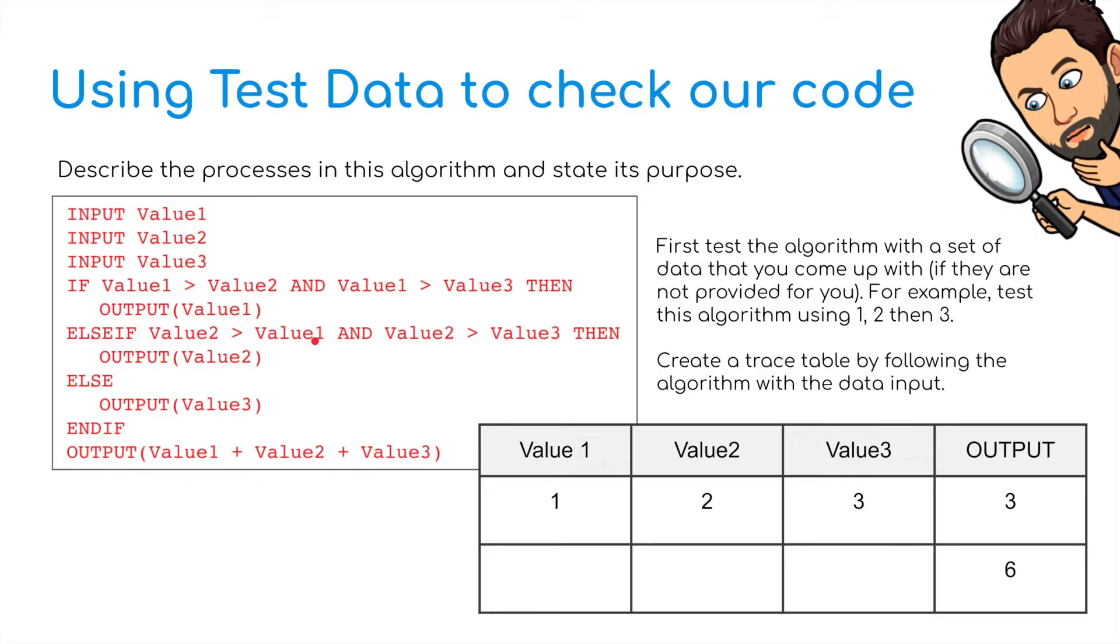Elif value 2 is greater than value 1 and value 2 is greater than value 3, then output value 2. Elif output value 3. Well, value 3 is 3 and we've outputted value 3. And then finally output value 1 plus value 2 plus value 3 and we should get 6.